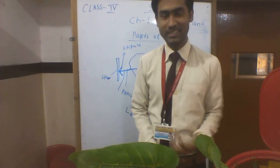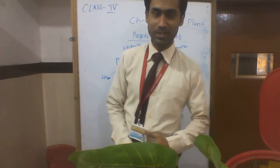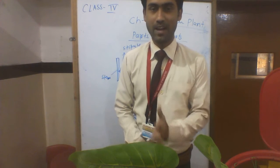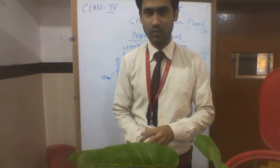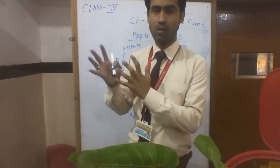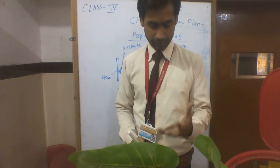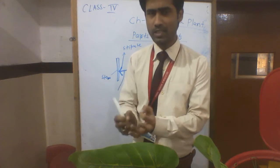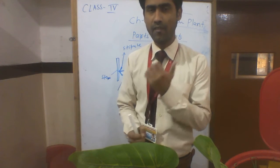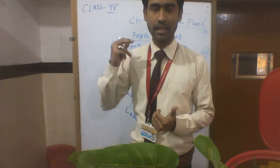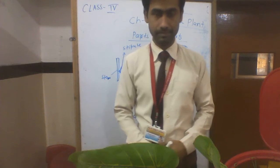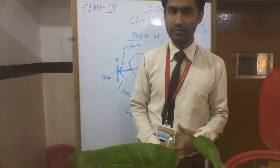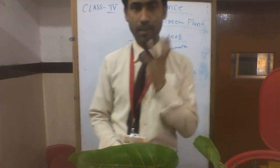Welcome again to deepastasislike.com. Today we will read about parts of a leaf. First of all, what is a leaf? A leaf is a mostly green, flat, lateral outgrowth in a plant. Now, what are the parts of leaves?